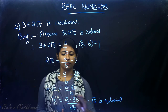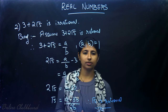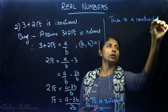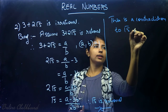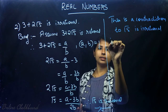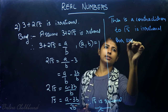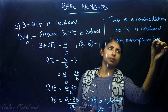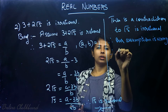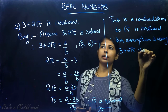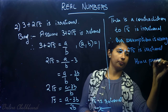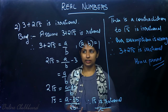But we got that √5 is rational, which is a contradiction to the fact that √5 is irrational. Therefore our assumption was wrong. The assumption that 3 + 2√5 is rational is wrong. By proof of contradiction, 3 + 2√5 is irrational.